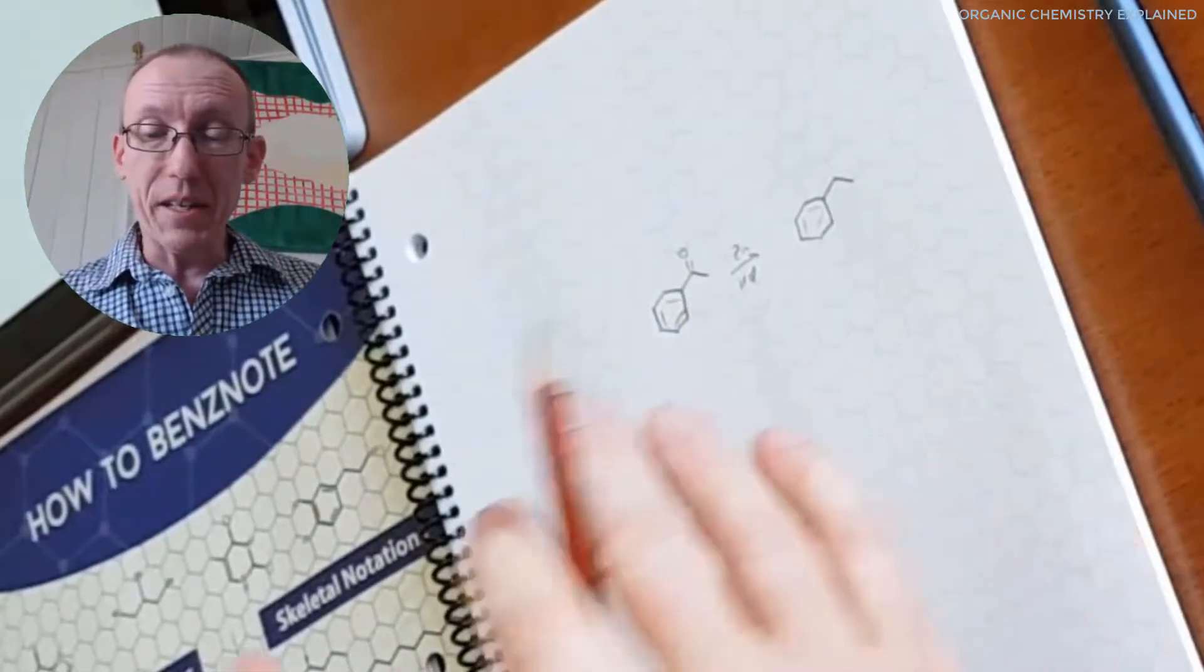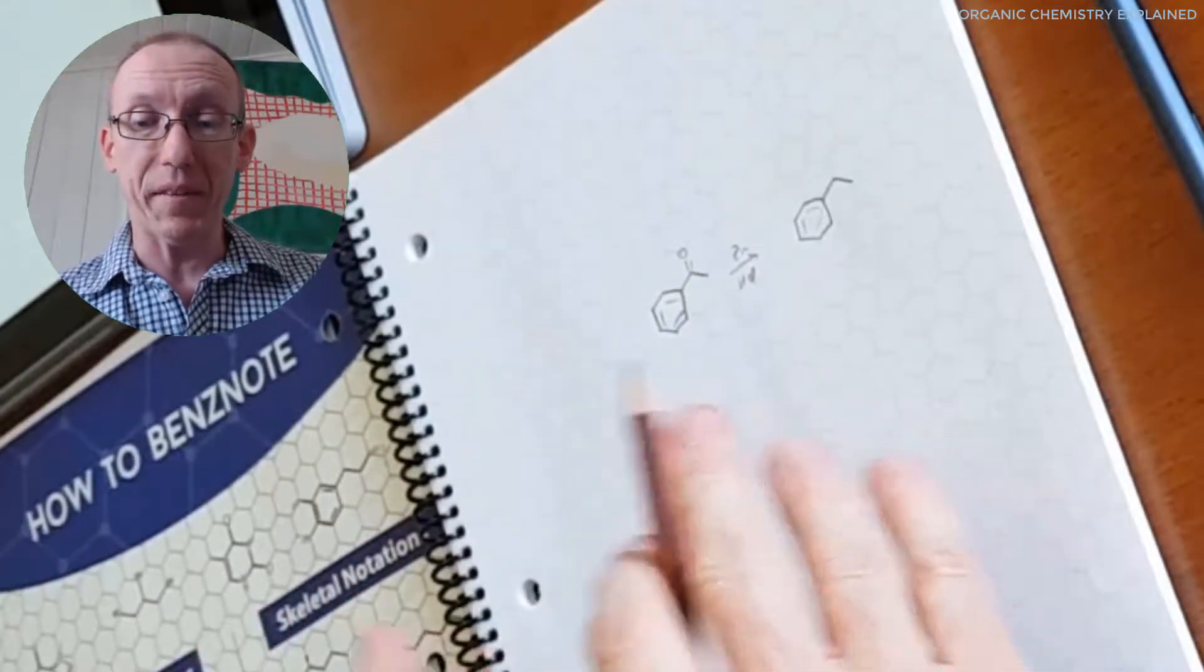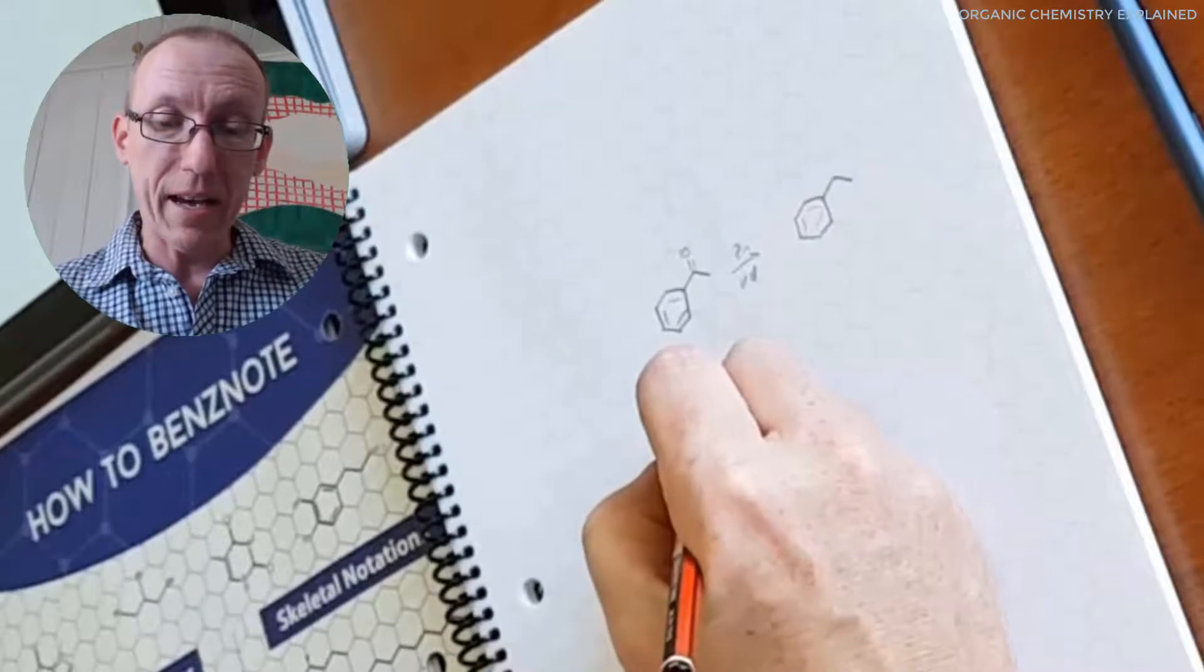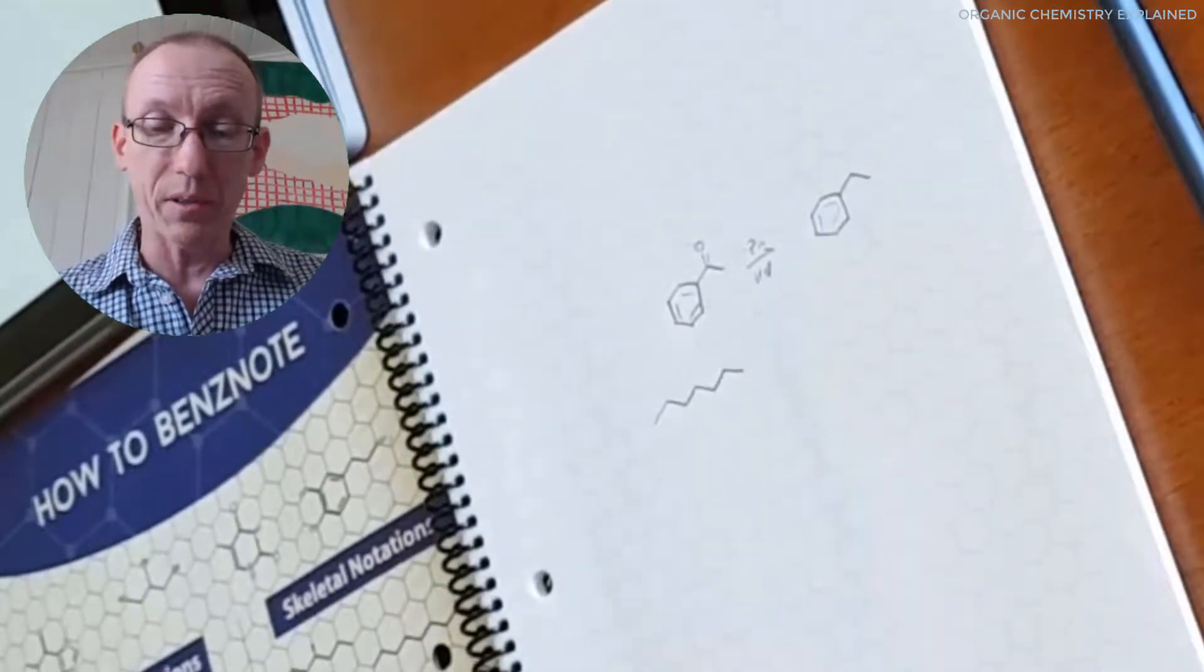Okay, now there's more you can do with a hexagonal template than just draw benzene structures. You can draw your zigzag or bond line structures or line bond structures like this.